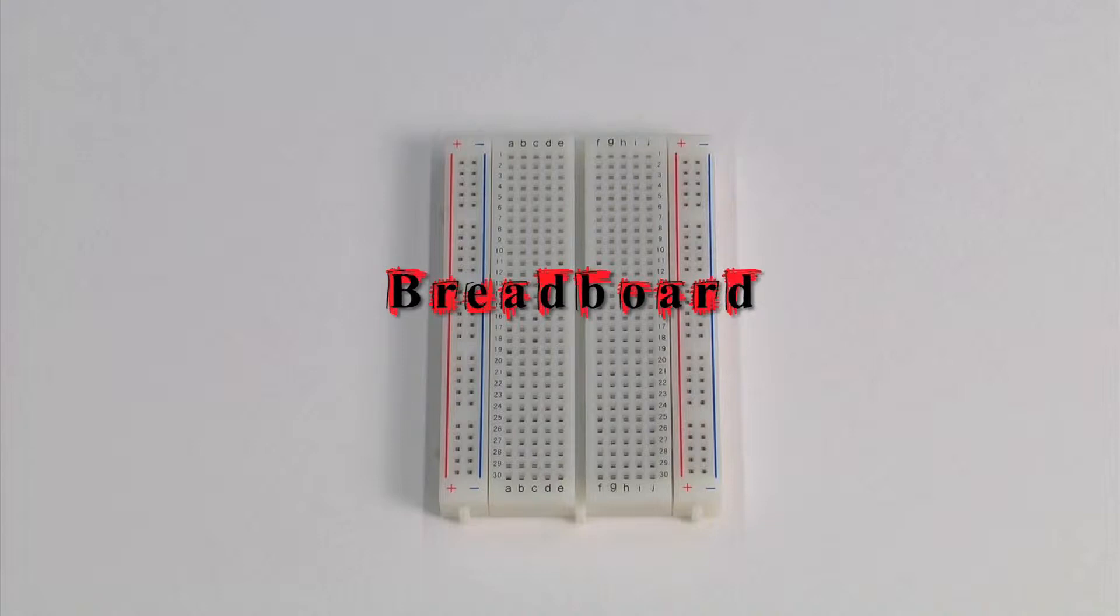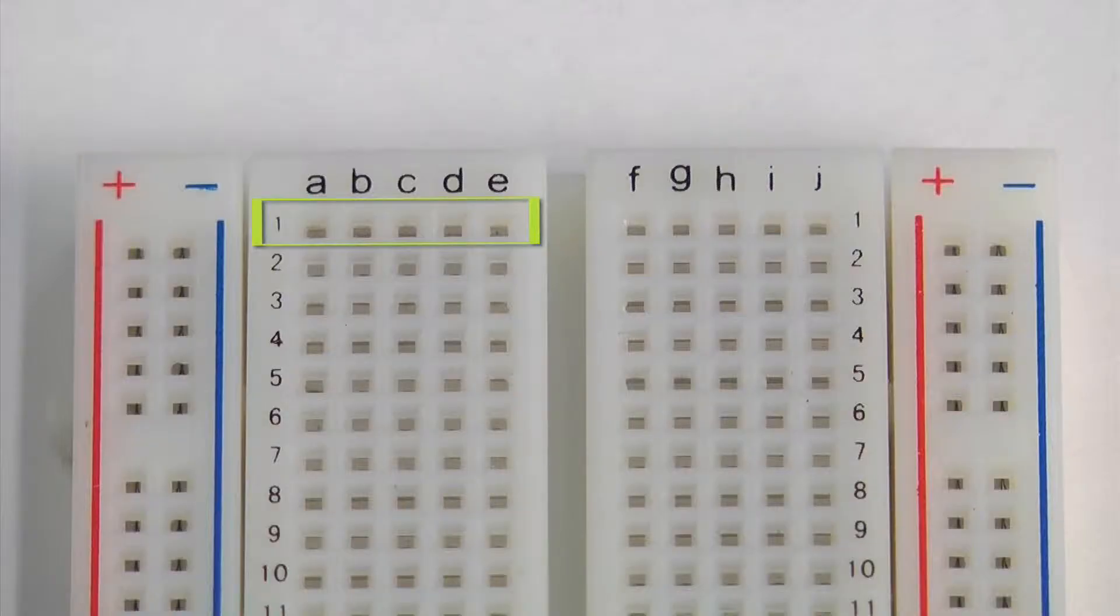Breadboards are devices used by engineers to build and test circuits. There are a few things we need to know about breadboards before we can begin using them. All five holes in a single row are connected inside the breadboard.